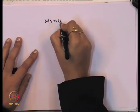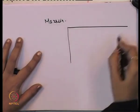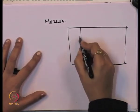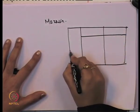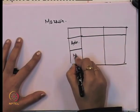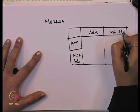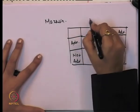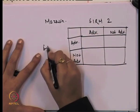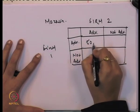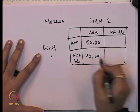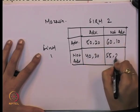Then we will understand the maximin and minimax strategy using this specific example. To start with, we will do the maximin. We will redo the payoff matrix: when both advertise the payoffs are 50 and 20; when firm 1 advertises and firm 2 does not, it is 40 and 30; when firm 1 does not advertise and firm 2 advertises, it is 60 and 10; when both do not advertise, it is 55 and 25.